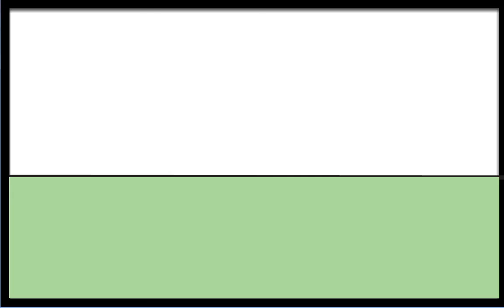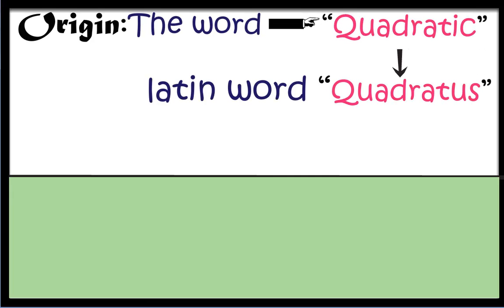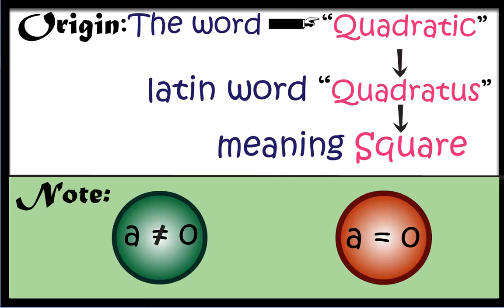The word quadratic comes from quadratus, which means square in Latin. Note, the condition that a is not equal to zero makes sense, or else the equation will not have a variable in second degree.